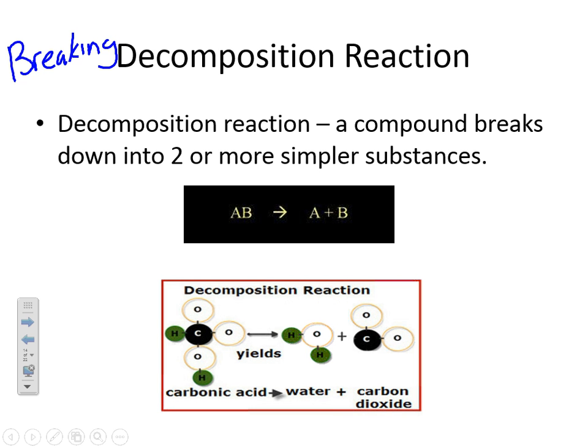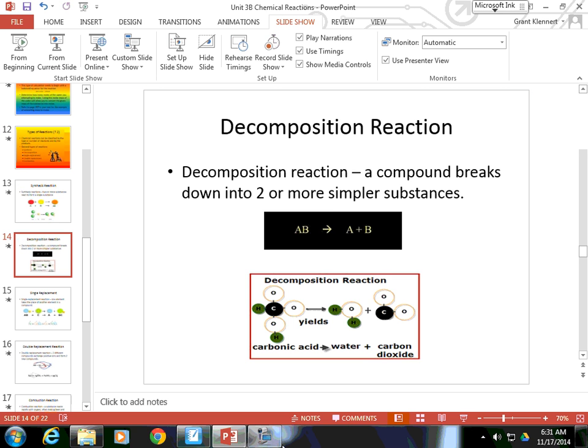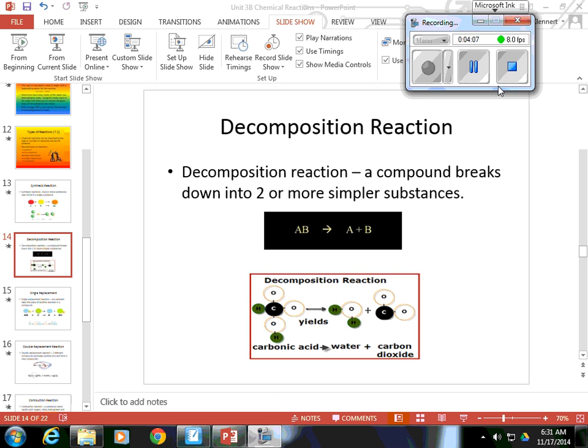So, the first two types of chemical reactions. The first is synthesis. In synthesis, we are making bonds, taking two things and combining them together. In decomposition, we are breaking bonds, where we are taking one thing and breaking it into two or more items. This is Mr. Klinert, and I'm signing off.